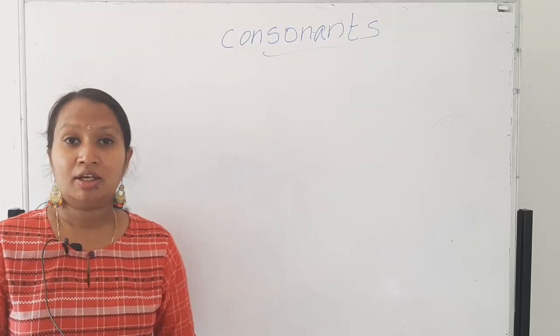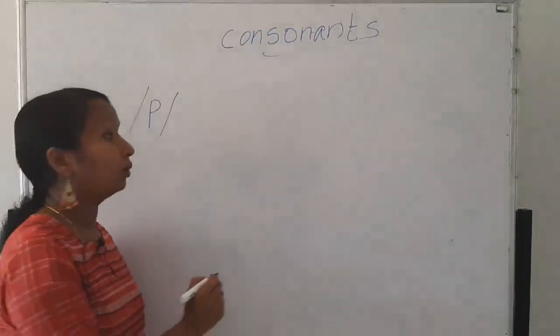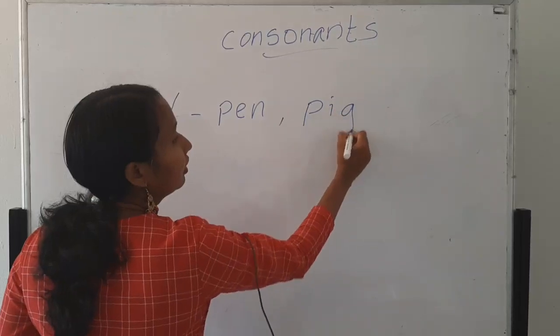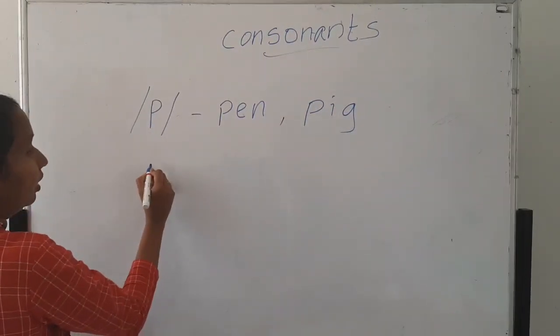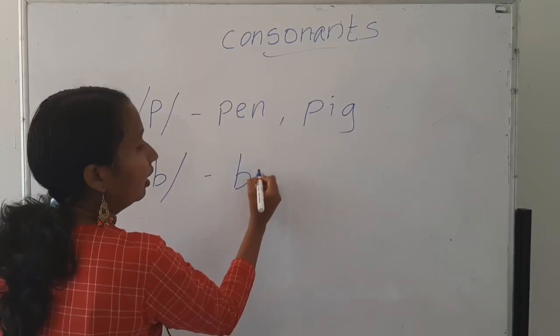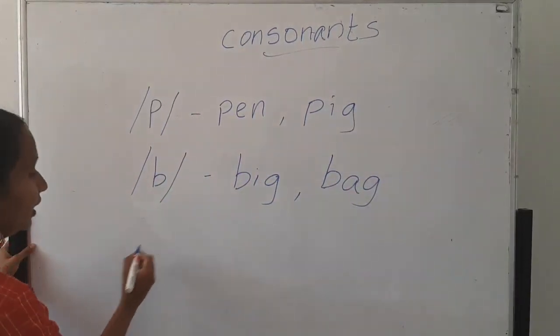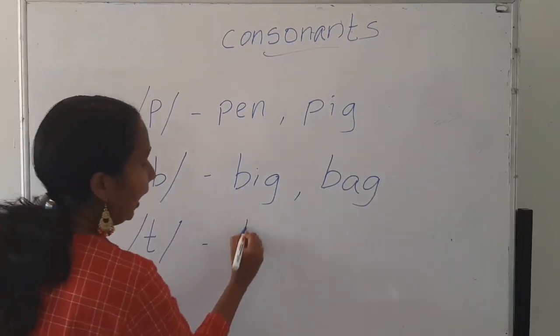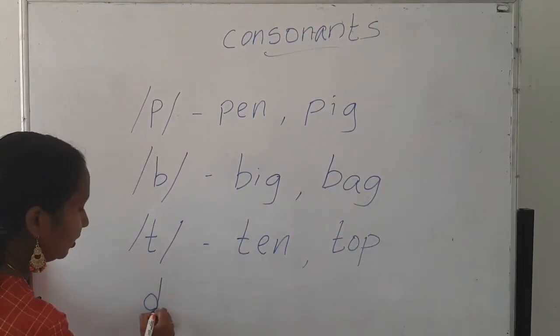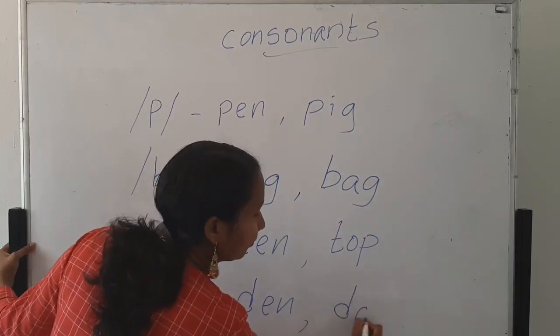Hi dears. Now we can start with the consonant sounds. First one is P sound. P as in pen, pig. Next one is B sound. B as in pen, pig, back, back. Next one is T. T as in ten, top. D as in den, top.